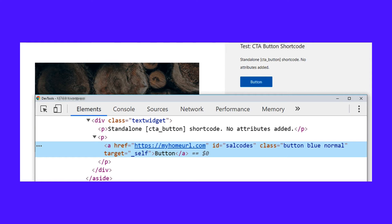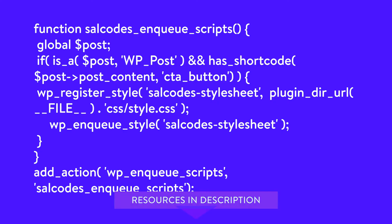This ensures that even if you change or update your WordPress theme, these classes will still load along with the shortcode. The SalCodesEnqueueScripts function defines the post's global variable and then confirms two conditions via instanceof. This checks whether post is an instance of the WP_Post object, referring to all the post types in WordPress. And then has_shortcode checks whether the post content contains the CTA button's shortcode. If both conditions are true, the function registers and enqueues the style.css stylesheet included in the CSS folder. The plugin_dir_url function makes it easy to get the URL of the plugin's directory. The CSS code is linked in the video description below.